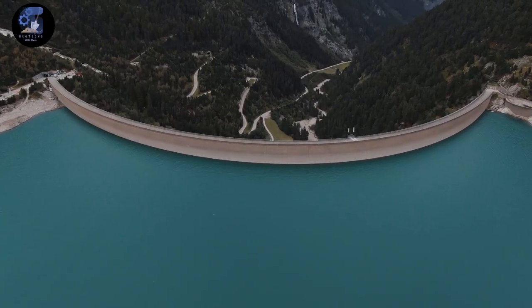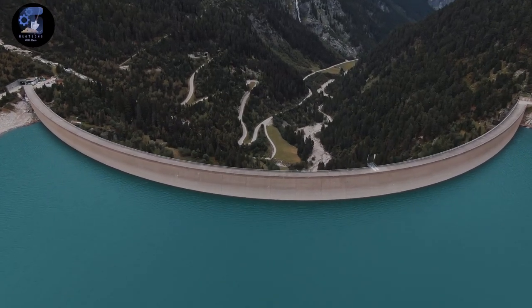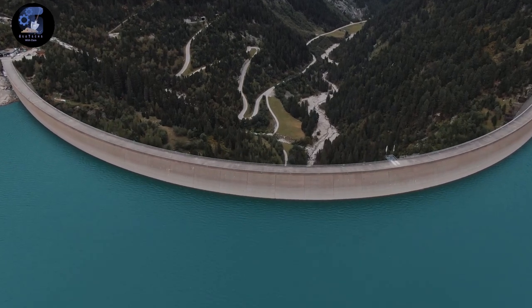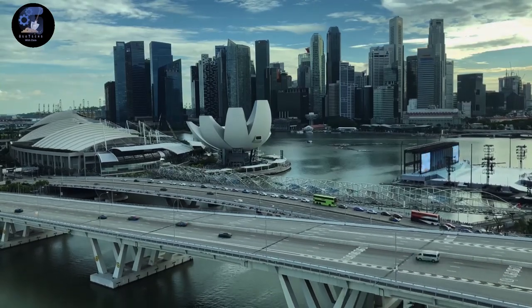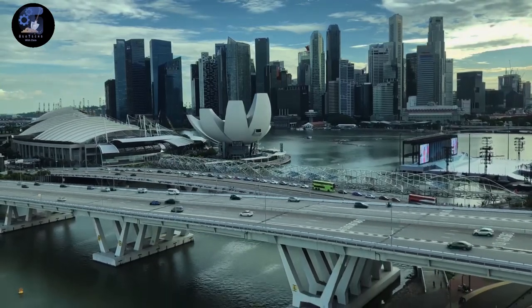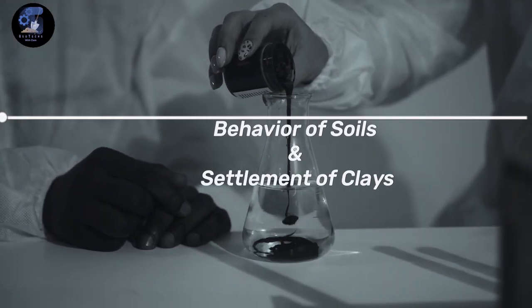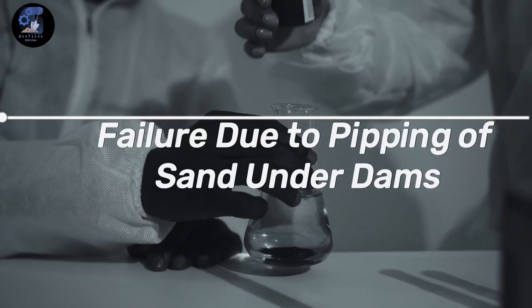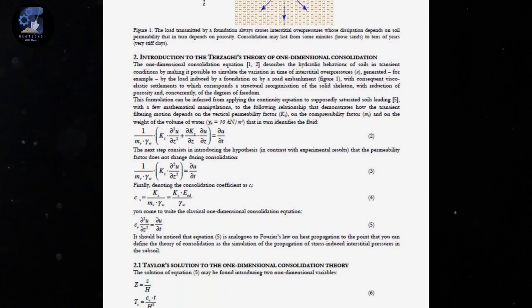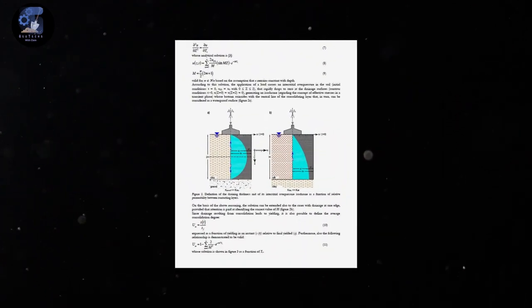Terzaghi pioneered making dams, buildings, and other structures safe even though they were founded on soil. This required that there be a science of soil mechanics as well as an art to soil engineering. After the end of World War One, he went on to lecture at an American Robert College in Istanbul, where he began his research on the behavior of soils, settlement of clays, and the failure due to piping of sand under dams. He developed the theory of consolidation of clays as we know it today.